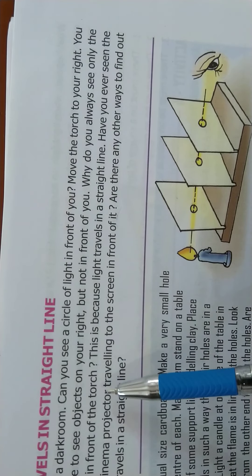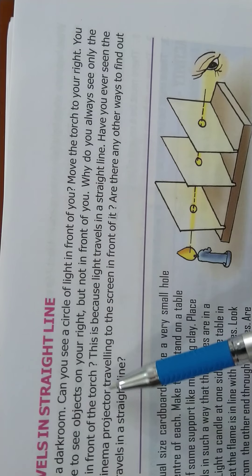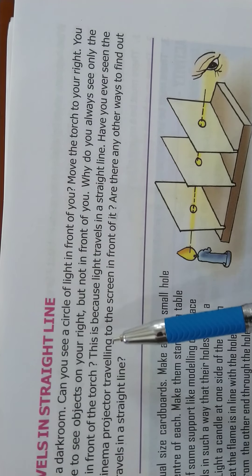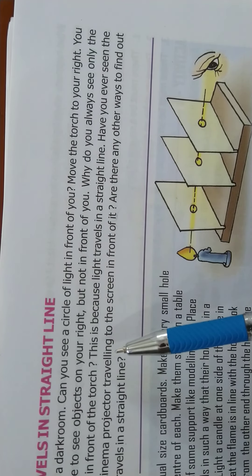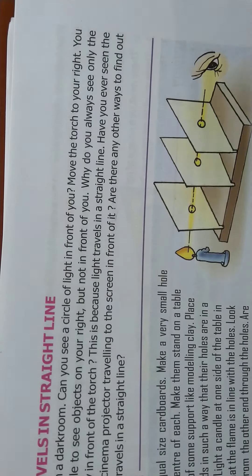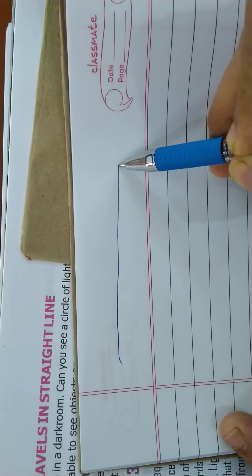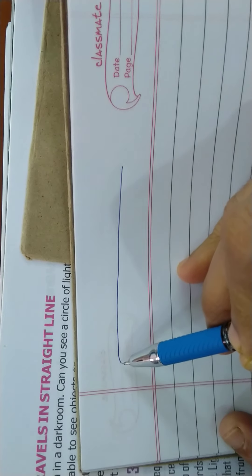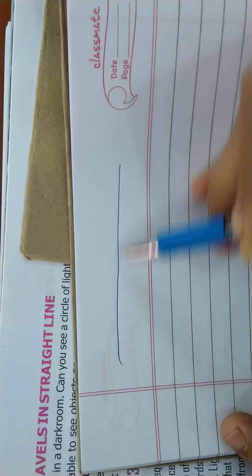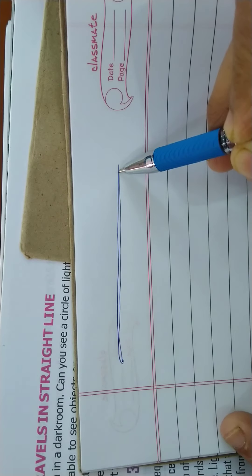This is because light travels in a straight line. When you light the torch in the dark room, you will see the light from the torch traveling in a straight line.